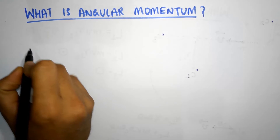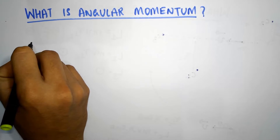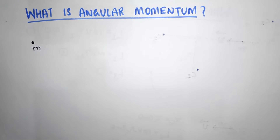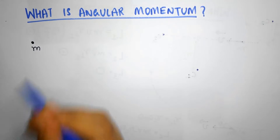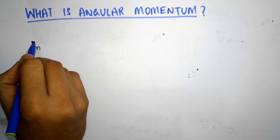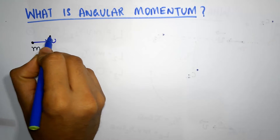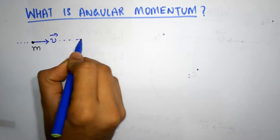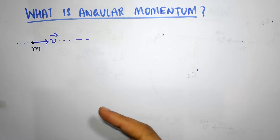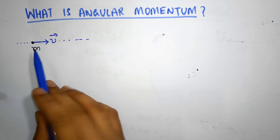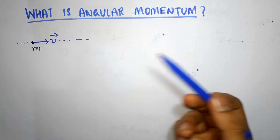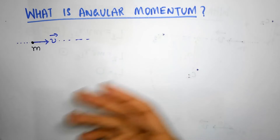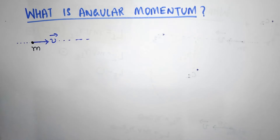Welcome! Last time we saw that if you have a particle of mass m having some velocity v in some random direction, moving in a straight line, then we discussed that this particle must have angular momentum. Today I'm going to talk about how we are going to define angular momentum for this.